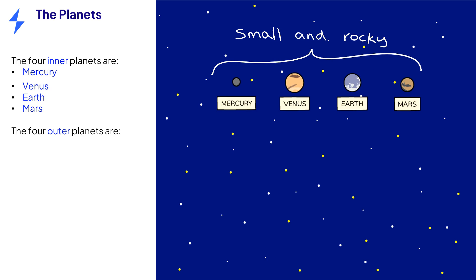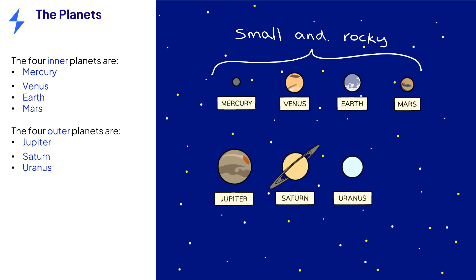The outer planets are Jupiter, Saturn, Uranus and Neptune. These four planets are large, cold and made from low-density gases.